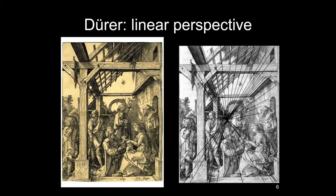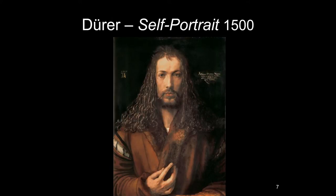Dürer was a master of linear perspective. Let's look at his self-portrait of 1500. One of the things Albrecht Dürer does is sign most of his work — sometimes with his monogram. It's 1500, with his monogram below: an A with a flat top and below the crossbar a capital D, his initials. He signs and dates much of his work, which is very helpful to art historians because he's documenting himself, showing us his development, and we know when he created different works.